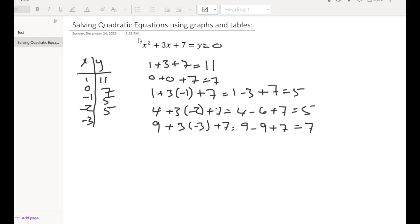Let's pick another. Let's put 7 here. Let's go one more. Minus 4. 4 squared is 16 plus 3 times minus 4 plus 7. We got 16 minus 12 plus 7, so that's 4 plus 7 is 11.